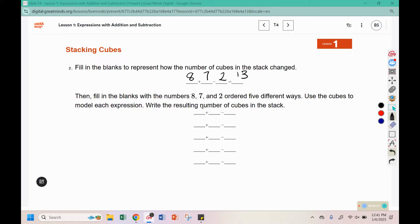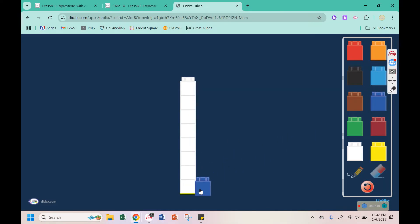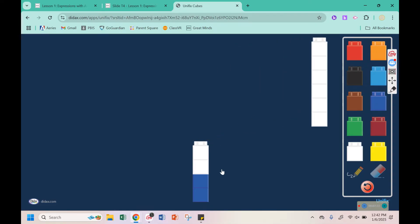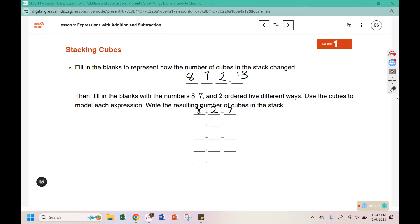So what if instead we started with eight and we added two and then subtracted seven? So here's our eight and we're going to add two, and then we're going to remove one, two, three, four, five, six, seven. How much is left now? Well, it only took off six. We need one more. There we go. One, two, three, four, five, six, seven. We have three remaining. So we can write that this one came out to three.